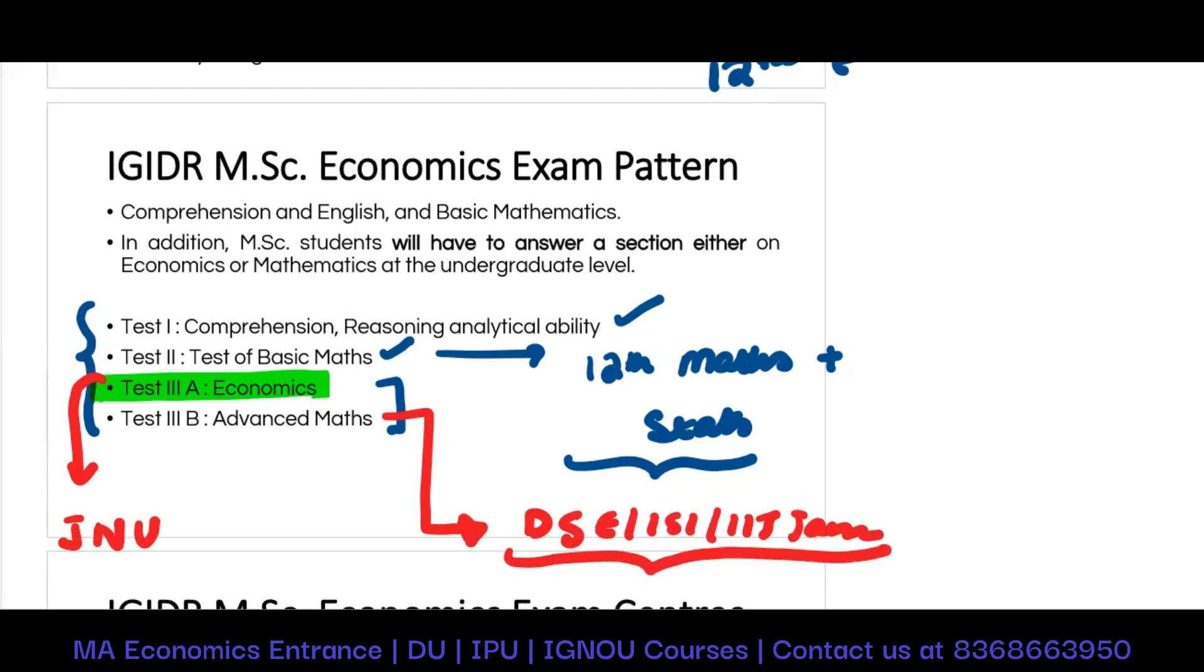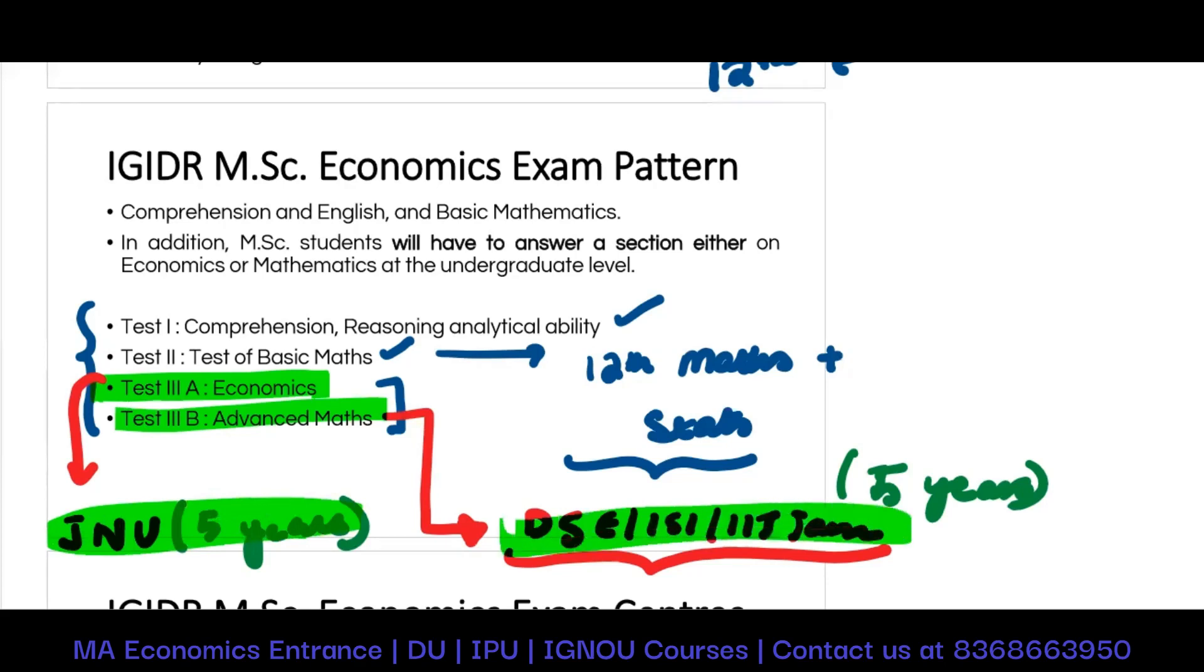When it comes to the economics paper, the level of this economics paper is very similar to the level of JNU. But when it comes to the maths level, you should be familiar with what comes in BSE, ISI, IIT JAM - very close to this is what would be asked in the advanced maths portion. My suggestion would be to do at least the past five years of JNU, BSE, ISI, IIT JAM last two year papers because there is no specific paper that you will get from IGIDR. You will only get a few mock tests.